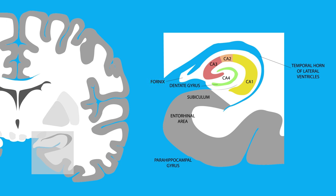The fornix, another part of the limbic system, is a bundle of nerve fibers that act as a major output tract of the hippocampus. The entorhinal area is the main gateway of communication between the hippocampus and the neocortex, the largest part of the cerebral cortex and the portion of the mammalian brain involved in higher-order brain functions.